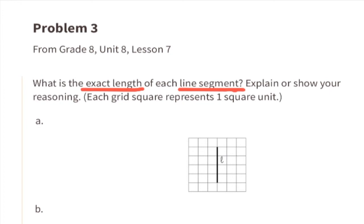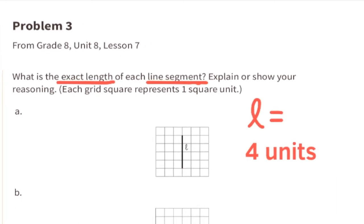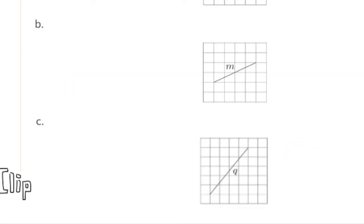Problem number three from eighth grade Unit 8, Lesson 7: What is the exact length of each line segment? Each grid square represents one square unit. Line l appears to be exactly 4 units in length. For side length m, I can turn this into a right triangle and use the Pythagorean theorem.